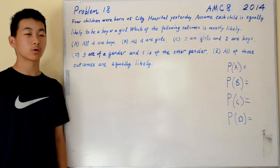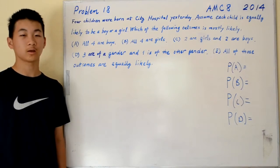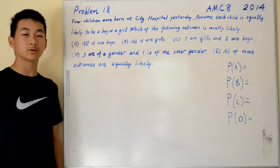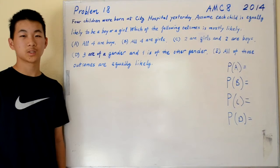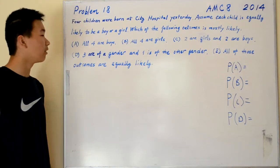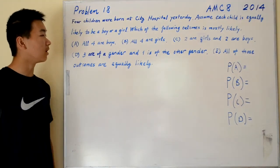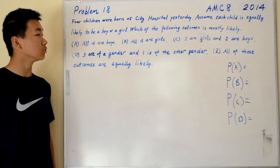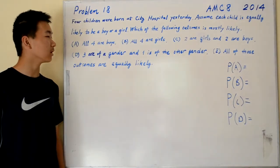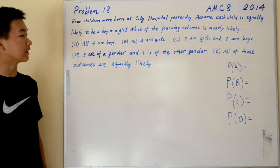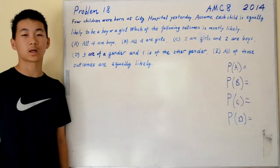The problem reads: four children were born at City Hospital yesterday. Assume each child is equally likely to be a boy or a girl. Which of the following outcomes is most likely? A. All four are boys. B. All four are girls. C. Two are girls and two are boys. D. Three are of a gender and one is of the other gender. And E. All of these outcomes are equally likely.